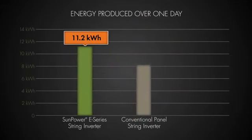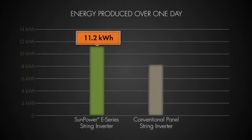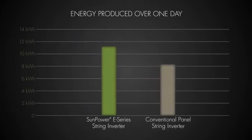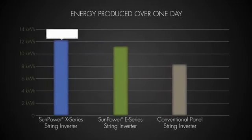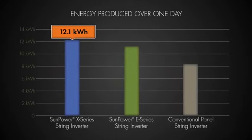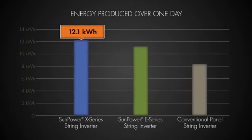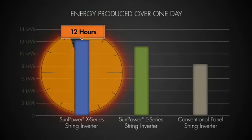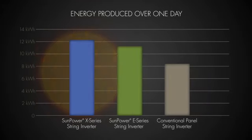The SunPower 20.4% efficiency panels produced 11.2 kilowatt-hours of energy. And the new SunPower X21 panels, at 21% efficiency, generated 12.1 kilowatt-hours of energy, enough to power the average home for about 12 hours.